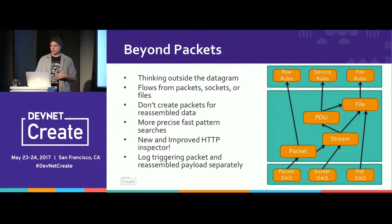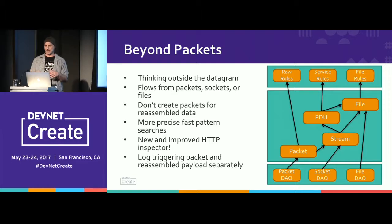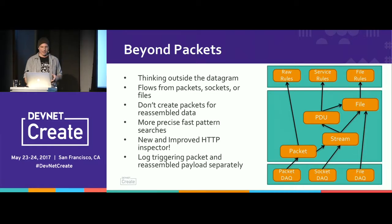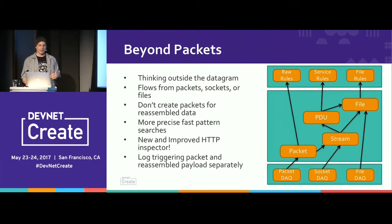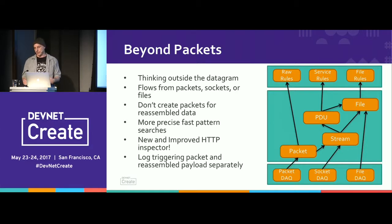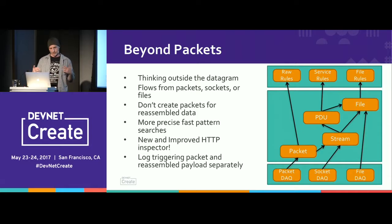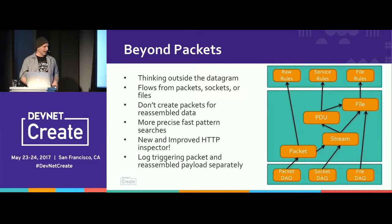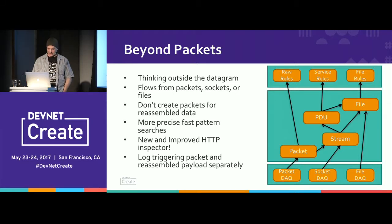Moving beyond packets: in vanilla Snort, everything is a packet — if you rebuild an HTTP PDU from a stream, you have to package it in an actual packet with all the layers. In Snort++, a packet is basically an abstraction — a unit of work — and we can attach a wire packet or an arbitrary buffer to it. This allows processing files directly (give it a PDF and it'll identify the file type and calculate a signature), or bridge two sockets and process the payload. There's also a new and improved HTTP inspector — the old one was a source of pain — and it's fully stateful.